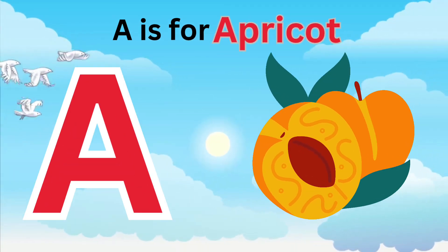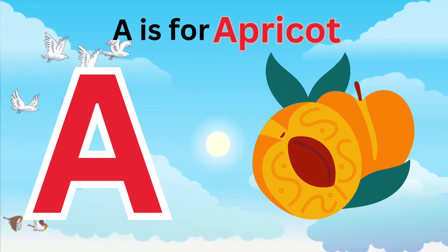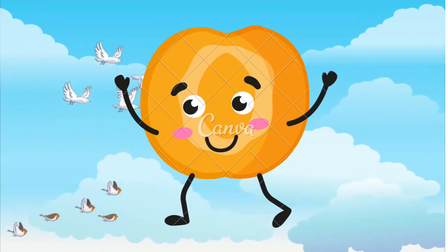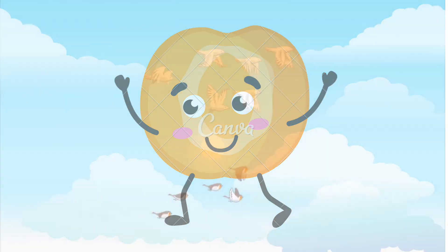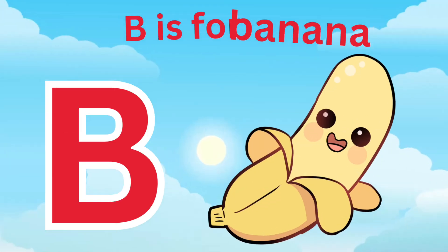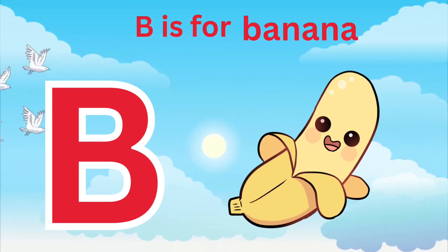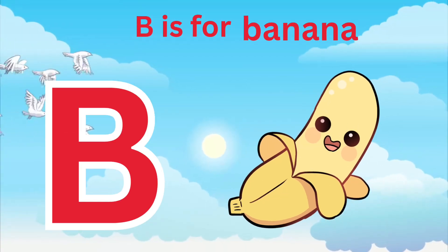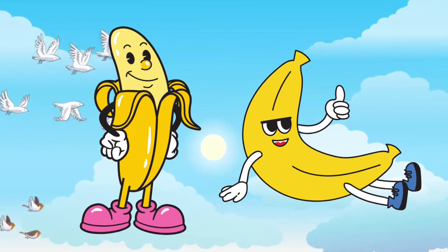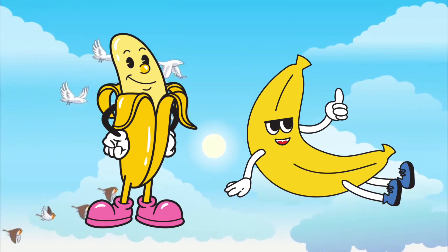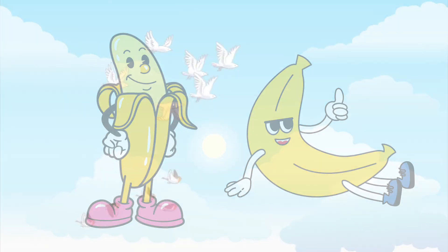A is for Apricot. A, A, Apricot. A is for Apricot. A, A. B is for Banana. B, B, Banana. B is for Banana. B, B, B.